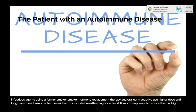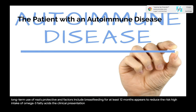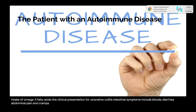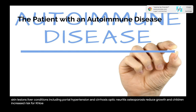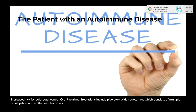Protective factors for UC include breastfeeding for at least 12 months and high intake of omega-3 fatty acids. Clinical presentation: intestinal symptoms include bloody diarrhea, abdominal pain, and cramps. Extra-intestinal manifestations may include colitis-associated arthritis, skin lesions, liver conditions including portal hypertension and cirrhosis, optic neuritis, osteoporosis, reduced growth in children, and increased risk for colorectal cancer. Oral-facial manifestations include pyostomatitis vegetans — multiple small yellow and white pustules on an erythematous and edematous mucosal base — aphthous ulcers, gingivitis, periodontitis, and possible taste changes.